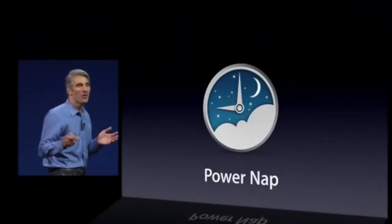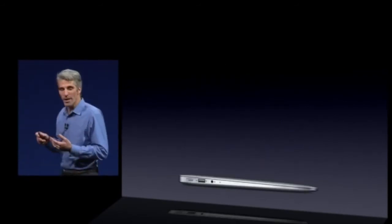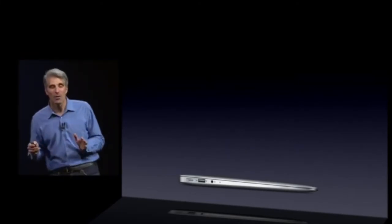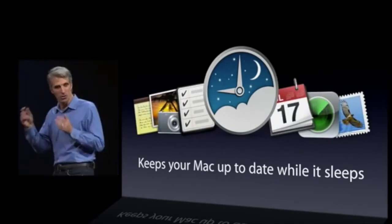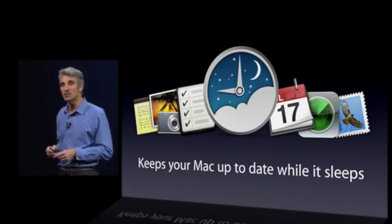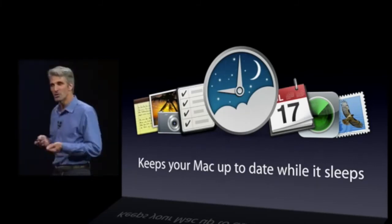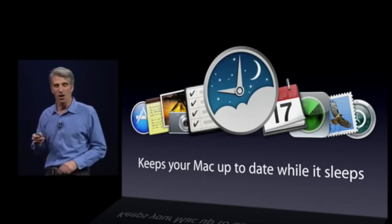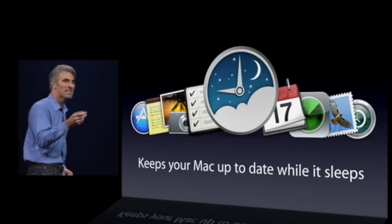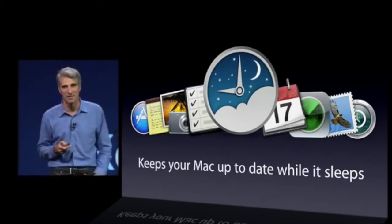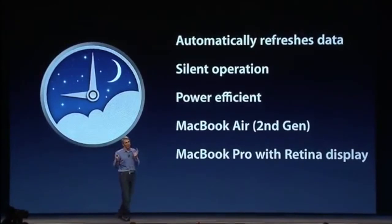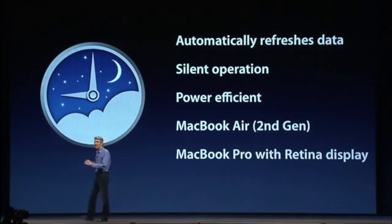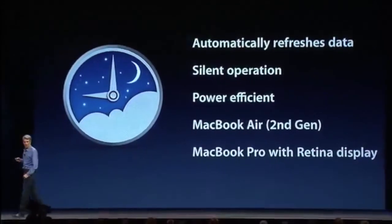Next is a new technology in OS X we call Power Nap. We all love using our Macs, but wouldn't it be great if when we weren't using them they were still working for us? With Power Nap they will. Power Nap keeps your Mac up to date while it sleeps — it fetches your email, keeps track of calendar and reminder updates, and even fetches your Photo Stream. When you plug your Mac in to charge overnight it'll also back itself up to your Time Capsule and download App Store and system software updates automatically. Power Nap is entirely silent, doesn't spin up your fans, goes easy on your battery, and is compatible with recent MacBook Airs and the new MacBook Pro with Retina display.